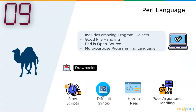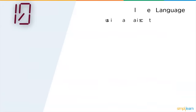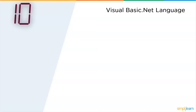The tenth programming language considered obsolete or fading away is Visual Basic .NET. VB.NET is a computer programming language developed by Microsoft, released in 2002 to replace Visual Basic 6. VB.NET is an object-oriented programming language, supporting encapsulation, polymorphism, abstraction, and inheritance.